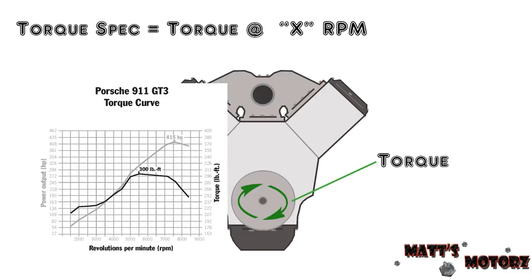Here's an example of what I mean. This is a torque curve for a Porsche 911. You can see that the torque changes as the RPM goes up, and it reaches a peak at around 5500 RPM.